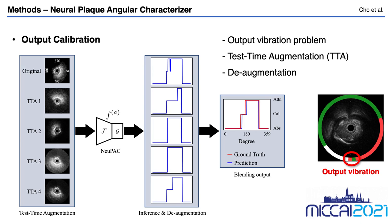During the inference phase, we randomly augment the input IVUS frame. After inference, for all augmented images including the original input, the inverse augmentation is conducted to remove the effect of transformation operations. Then, outputs are blended through a mean operation to minimize the output vibration and maximize the prediction power.